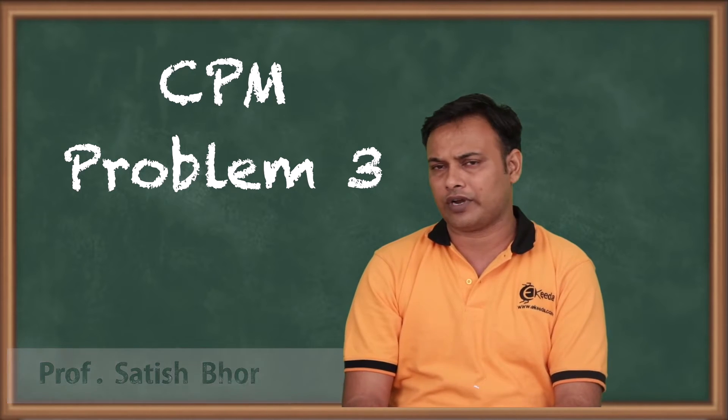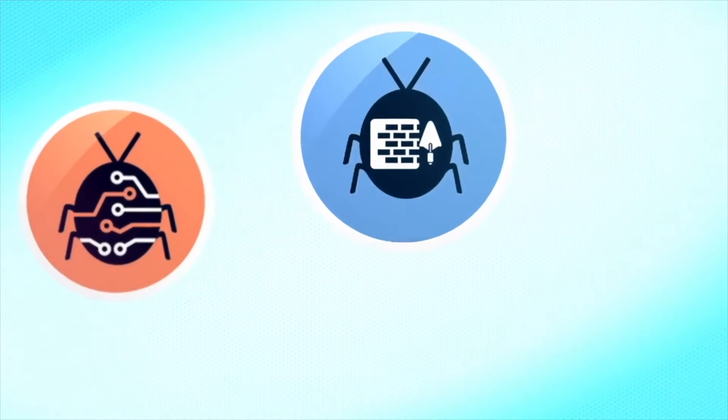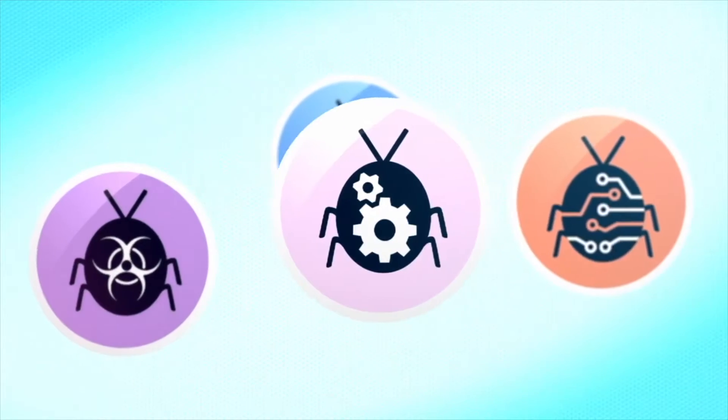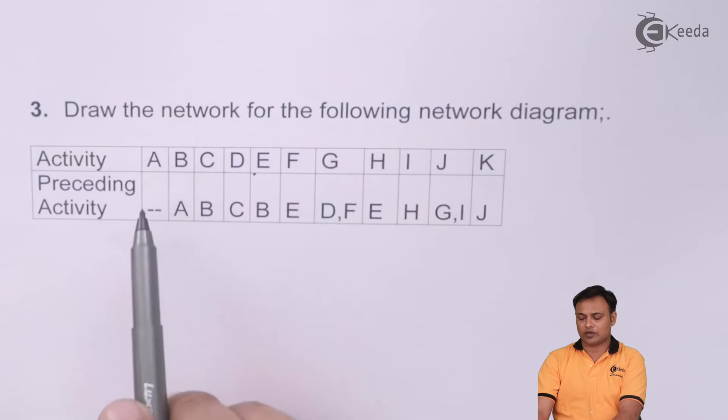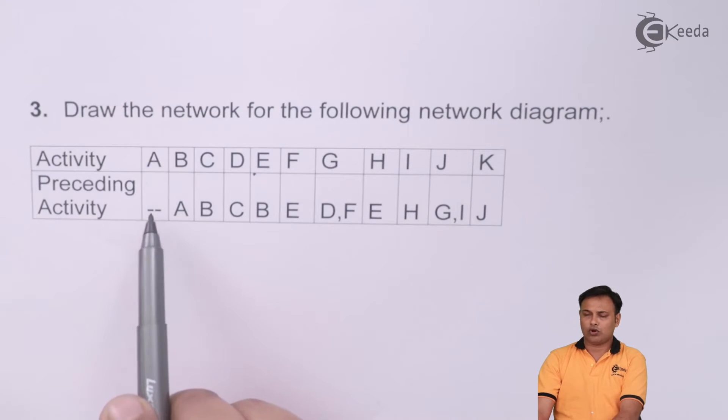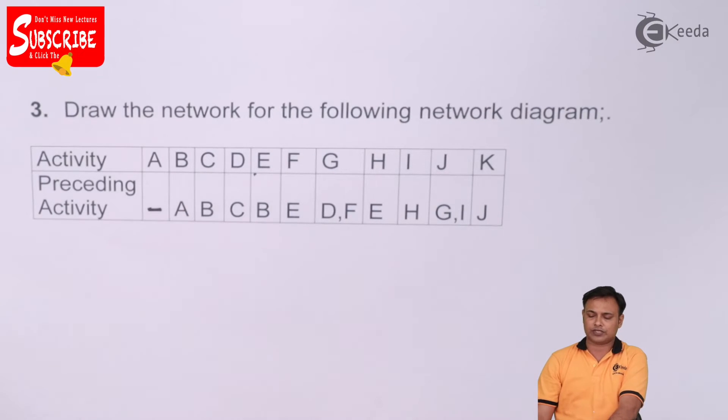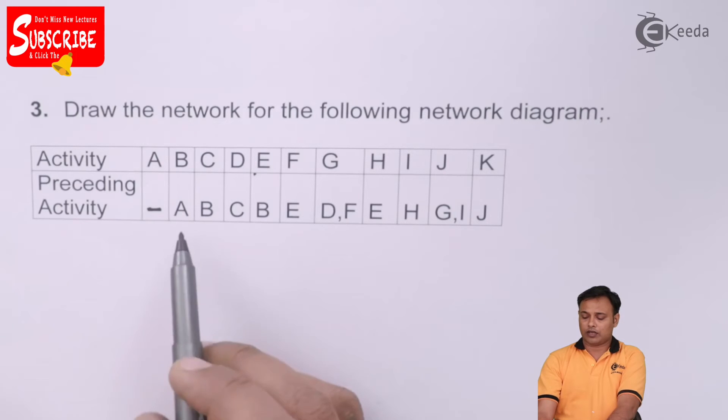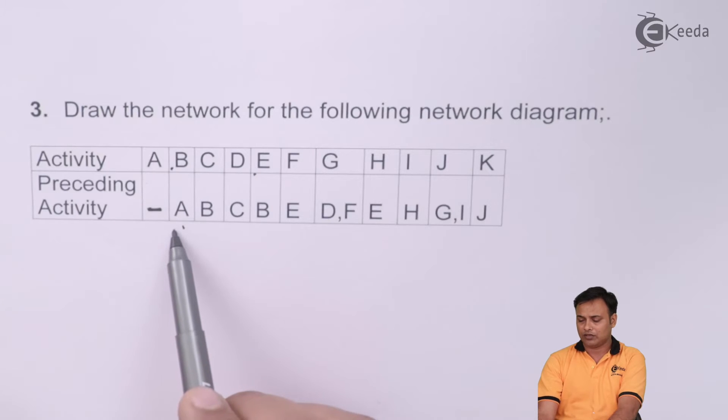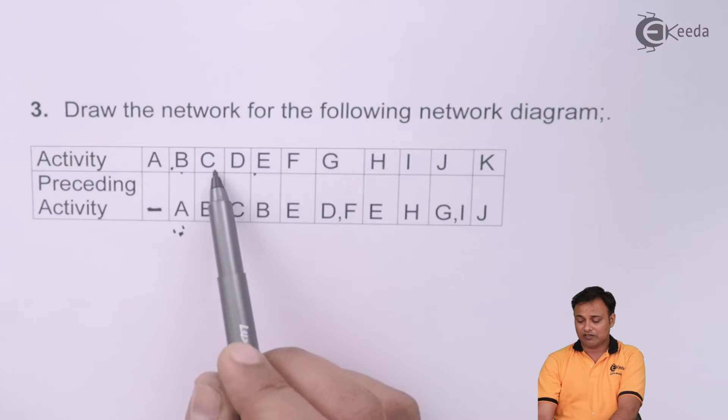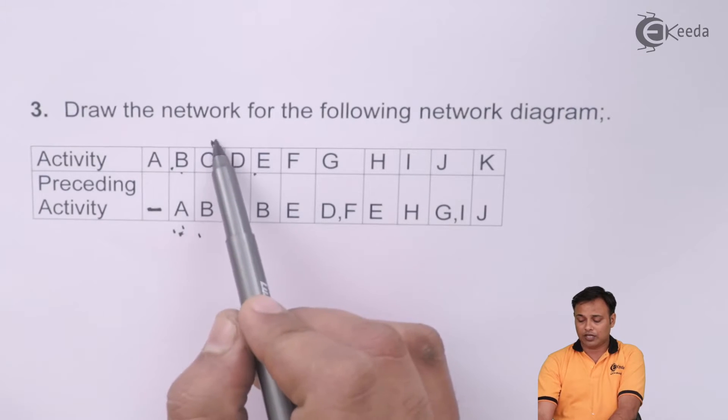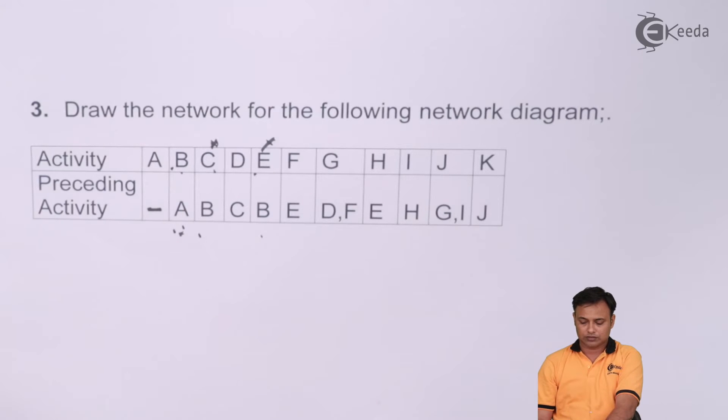Let's see this third sum now for network diagram. Here is the initial activity because there is no other activity before A, its preceding is dash. For B the preceding is A, that means B can start only after completion of A. In other words, B will come after A, C will come after B, even E will come after B, and D will come after C.